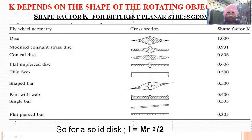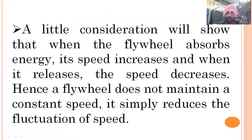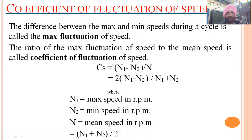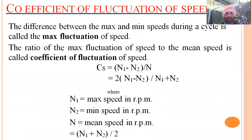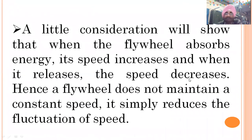I equals mk squared. Now, the coefficient of fluctuation of speed Cs is the difference between the maximum and minimum speed during a cycle divided by the mean speed. For a four-stroke engine the cycle is 720 degrees. Cs equals n1 minus n2 divided by n mean, and the mean speed n equals n1 plus n2 divided by 2, so Cs equals 2 times (n1 minus n2) divided by (n1 plus n2).